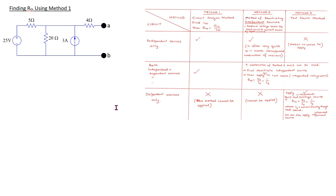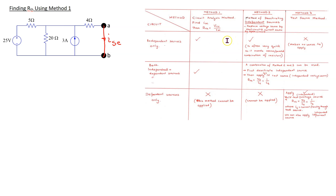Next, let's see how to find the Thevenin resistance. There are three main methods. For circuits that contain independent sources only, we can use method one — the circuit analysis method — or method two — the method of deactivating independent sources. For method one, remove the load resistor, then short circuit the terminals by connecting them with a wire, find the short circuit current, and then the Thevenin resistance is VTH divided by I short circuit. Since VTH is 32 volts, we just need to find the short circuit current.